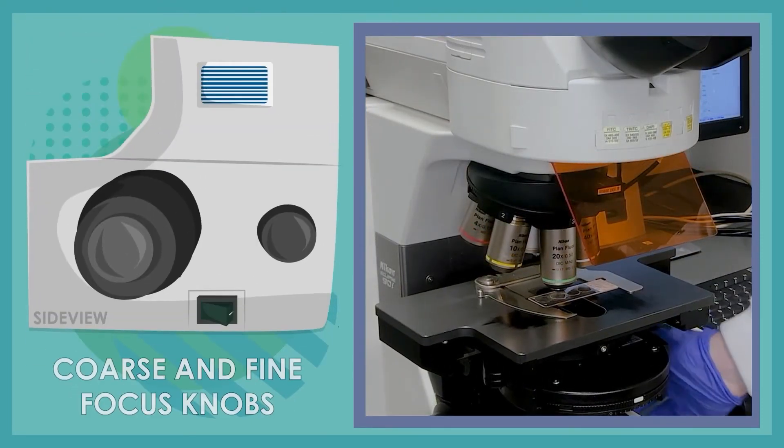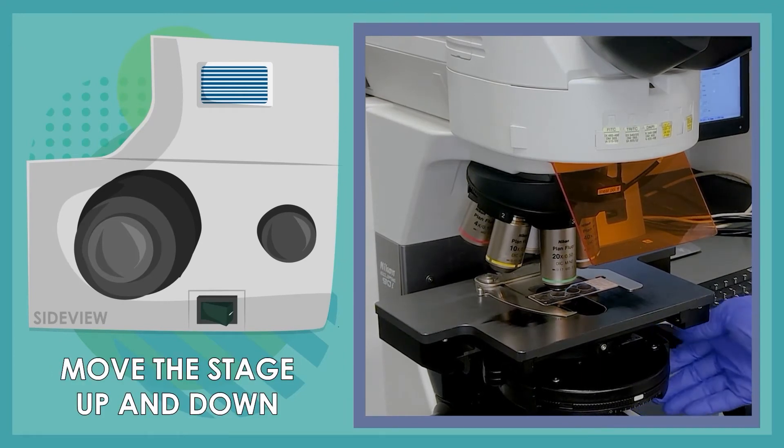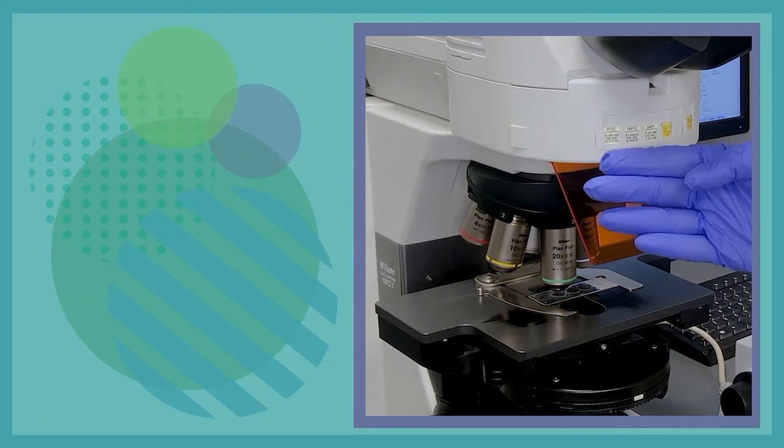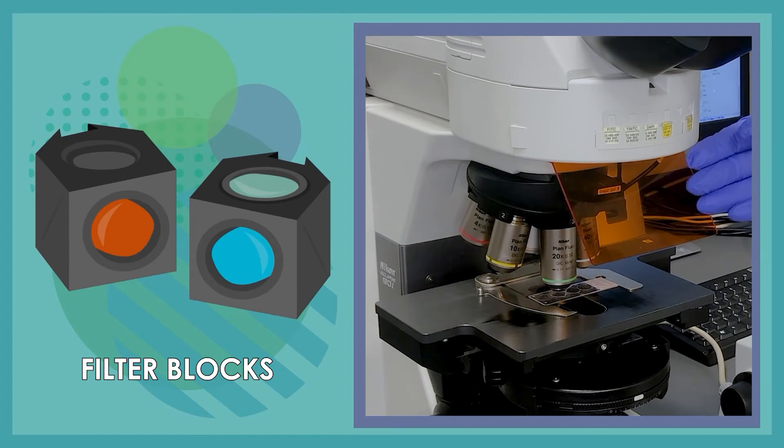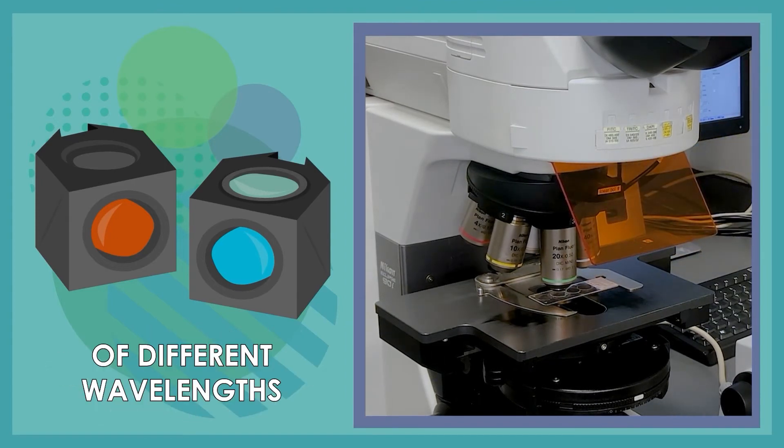Next we have the coarse and fine focus knobs that allow us to move the stage up and down to bring our sample in and out of focus. Within the microscope here we can also find filter blocks where we can use these filters to look at samples through different laser lines of different wavelengths.